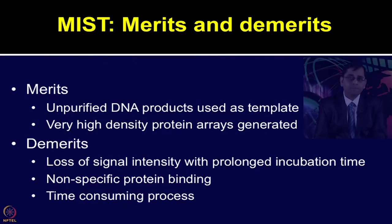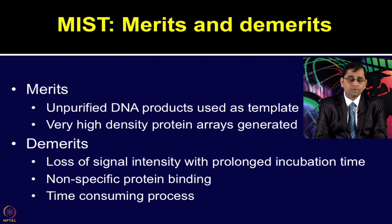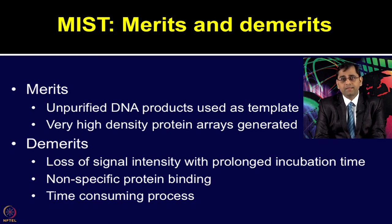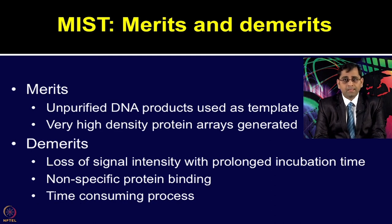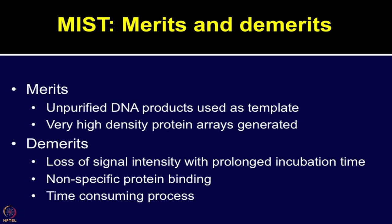Regarding merits and demerits of MIST technology: unpurified DNA products can be used as a template source, and very high-density protein arrays can be generated because the spot chemistry is not very complicated. Limitations include loss of signal intensity with prolonged incubation time of the arrays. Since the cell-free expression system is printed on top of the arrays, its stability could be a major issue. Non-specific protein binding and the overall process being more time-consuming are additional limitations of MIST technique.